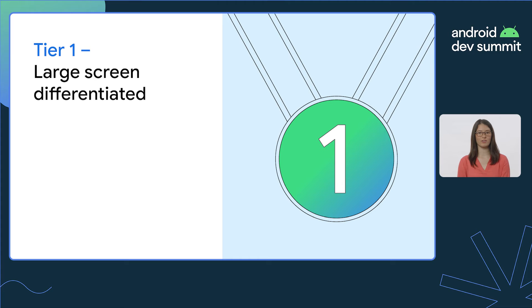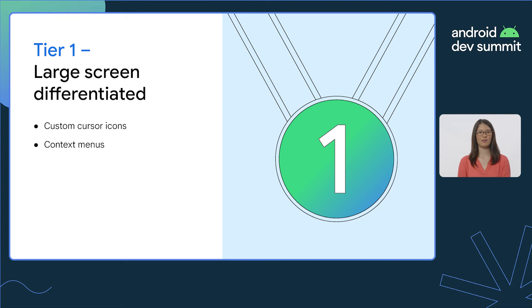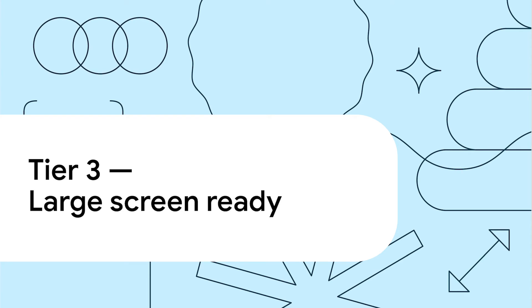Tier 1, also referred to as large screen differentiated, is the best level of large screen support that your app can reach. Reaching Tier 1 means you've completed all the requirements for Tiers 2 and 3 in addition to some additional items. We've highlighted custom cursor icons and context menus within this tier. Another category is to add a comprehensive set of keyboard shortcuts, which helps create parity with any equivalent web or desktop versions of your app. Now that we know what the different tiers entail, let's walk through some basic Tier 3 items together.